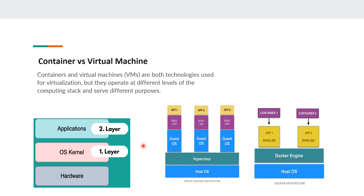Each guest OS has its own operating system — this can be Windows, Mac OS, or different flavors of Linux — all running on the same hypervisor, isolated from each other. On top of the guest OS, you can have your binaries and libraries, and on top of those libraries you have your application running. Coming to the Docker architecture, you have your host OS — Windows, Linux, or Mac OS — and on top of this you install Docker Engine. On top of that Docker Engine, you're going to have your binaries and libraries, and then your container running on top of it.